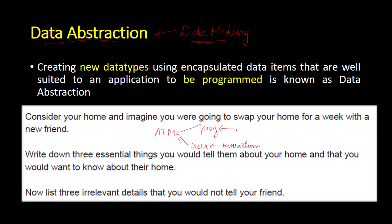A programmer sees an ATM as a set of codes and instructions. The codes and instructions are hidden from the user's perspective because his job is not to code or worry about how an ATM works — his job is just to insert the card and take the cash. The user should not be given a view of the code or program; he only sees statements like 'please enter the pin' or 'please insert the card.' This is what we call data abstraction.